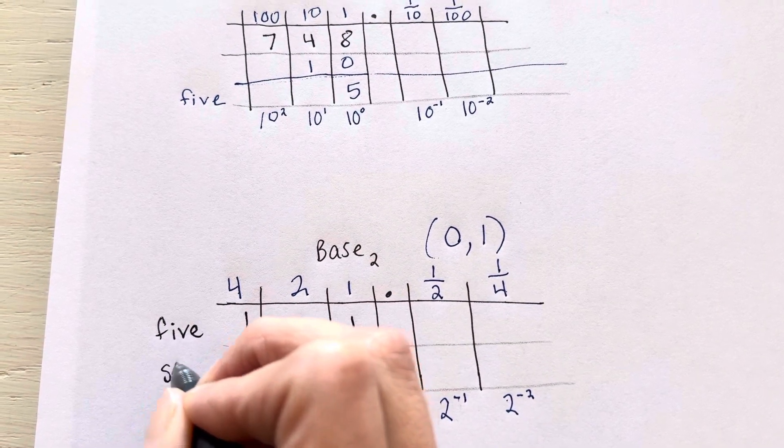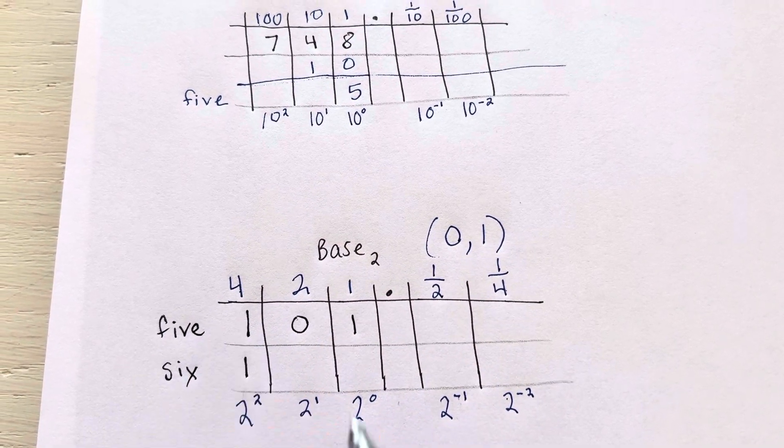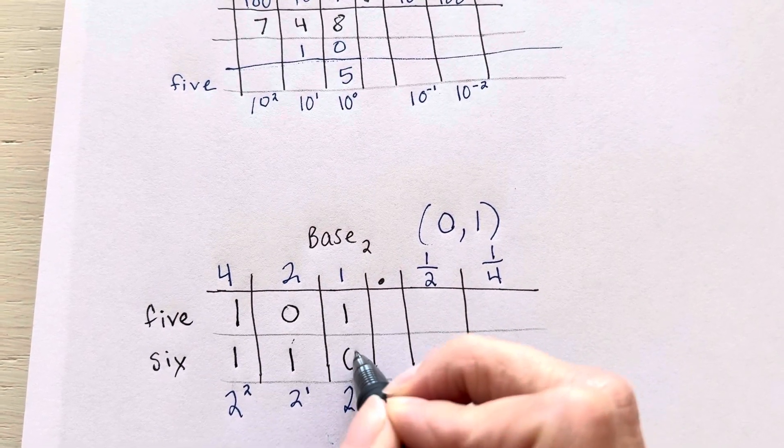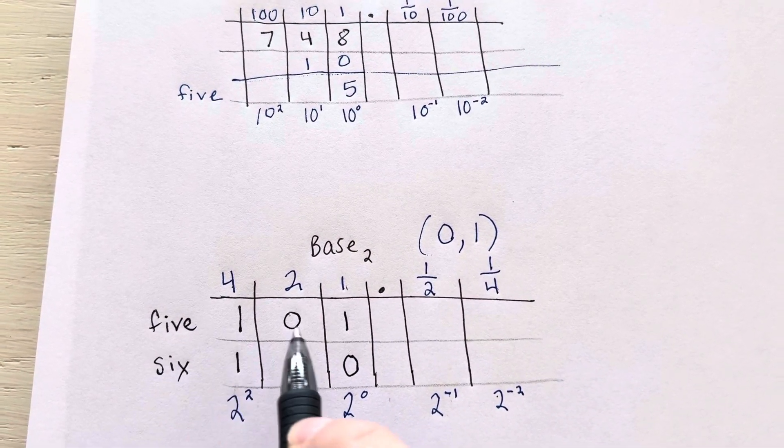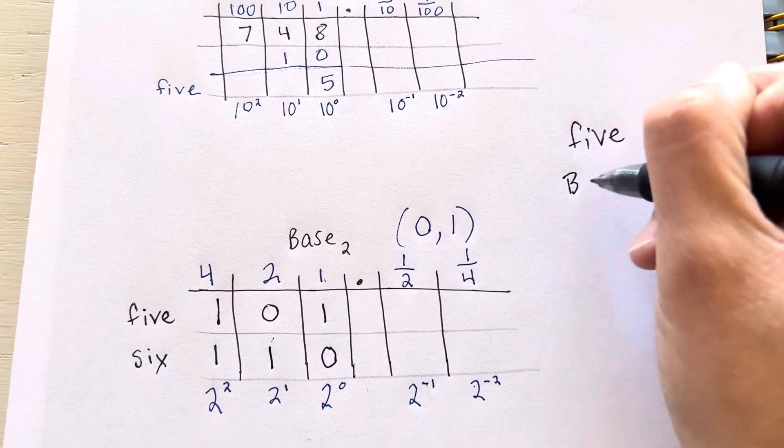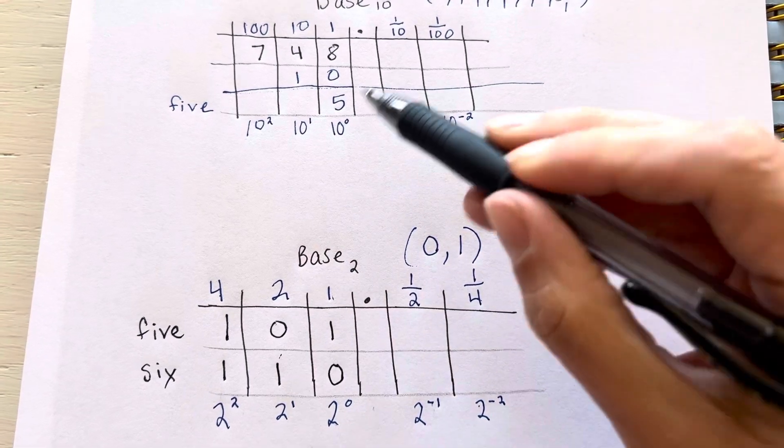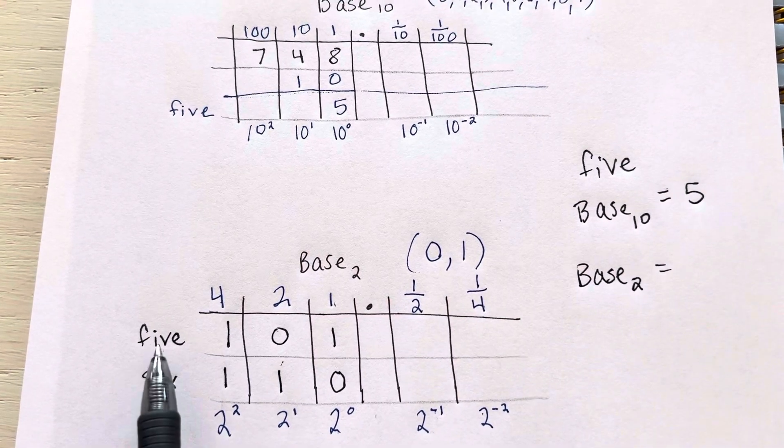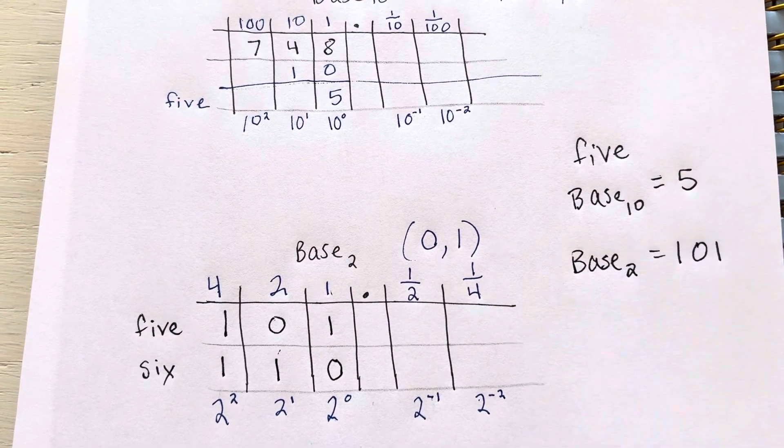If I did 6 for another example, I could have 1 four, and what do I have remaining? 6 minus 4 is going to have 2. I will still have a 2 remaining, so I have 1 of these and then I don't have any 1s. So 1 1 0, and 5 was 1 0 1. So if I were to write out 5 in base 10, 5 equals 5. We saw that up here. But on base 2, 5 equals 1 0 1.